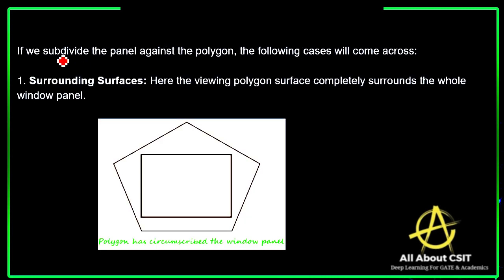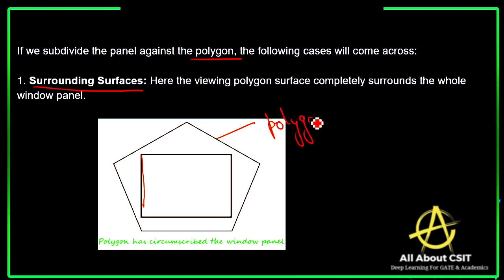If we subdivide the panel against the polygon, four cases will come across. The first case is surrounding surfaces: here the viewing polygon surface completely surrounds the whole window panel — the polygon completely surrounds the window panel. This is one case when subdividing the panel against the polygon.